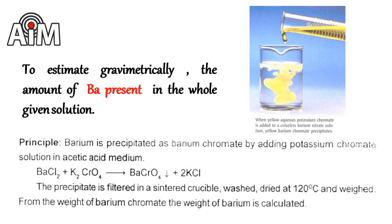To estimate gravimetrically the amount of barium present in the whole of a given solution of barium chromate, let us discuss the principle. Barium is precipitated as barium chromate by adding potassium chromate solution in acetic acid medium.